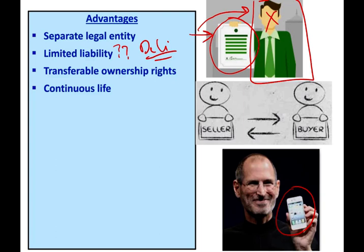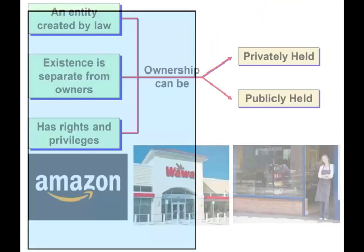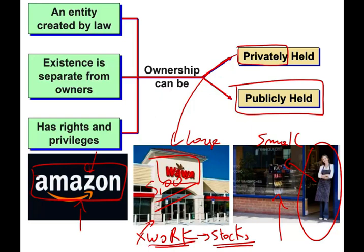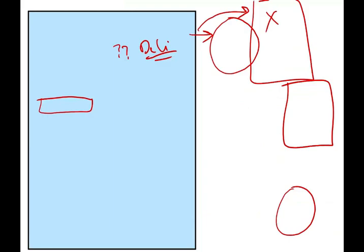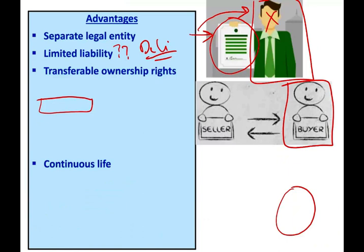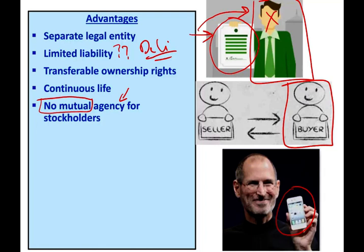Another advantage is no mutual agency for stockholders. Although you own stock — say I own stock of Amazon — I cannot contact Amazon and say I own some stocks, I'd like to make some deliveries for you. You cannot be an agent of the corporation unless you actually work for Amazon. Although I own Amazon stock, I cannot act on behalf of Amazon — I don't have agency power. There's no mutual agency; I cannot represent the company, which is actually better for me.